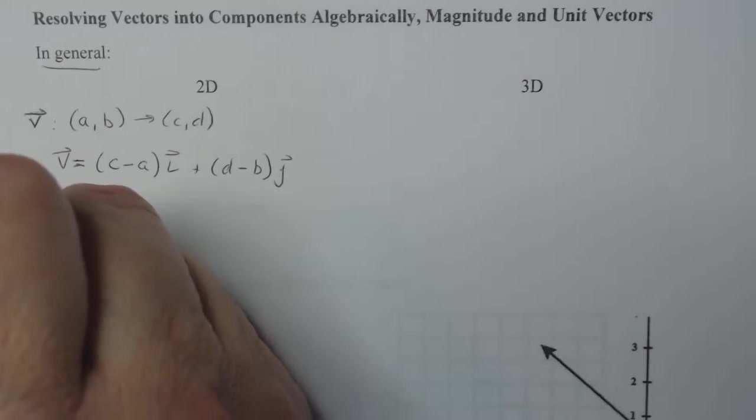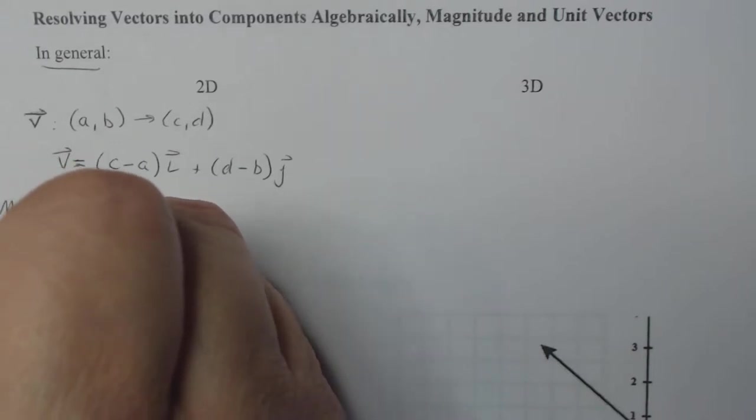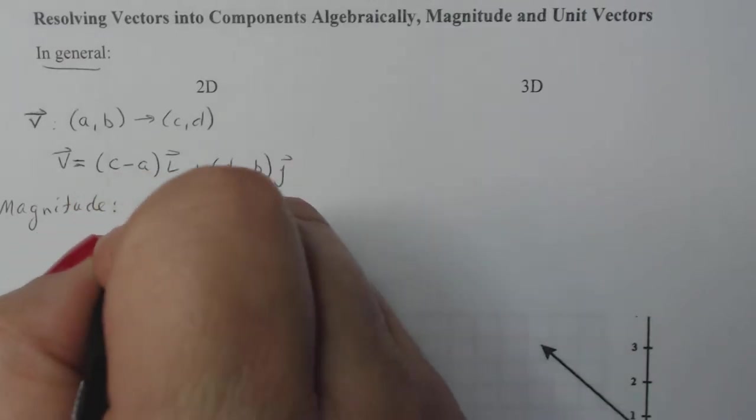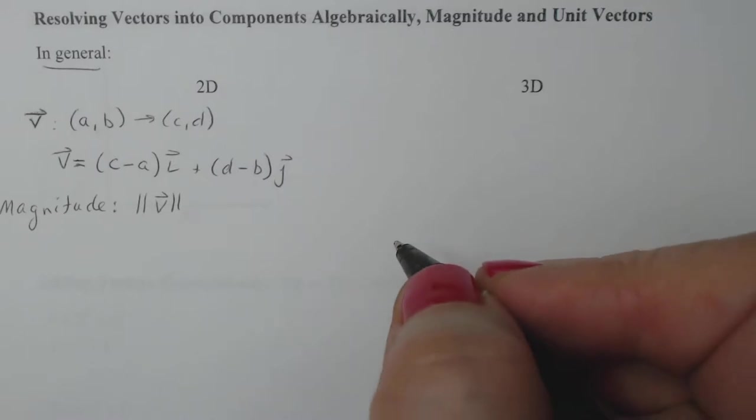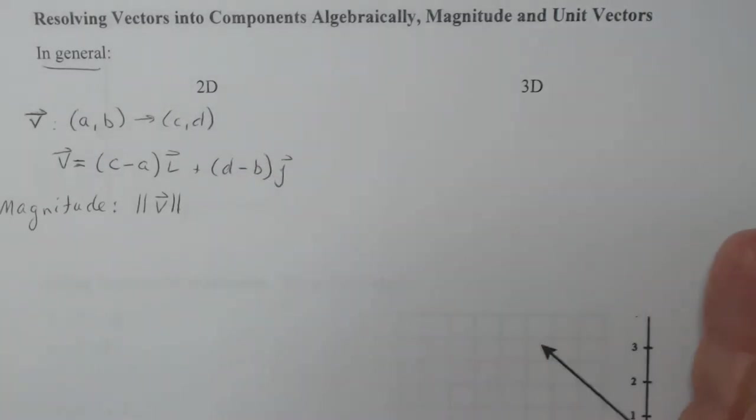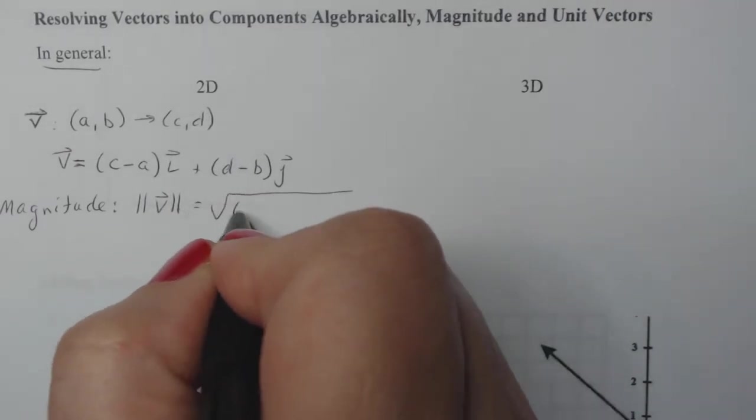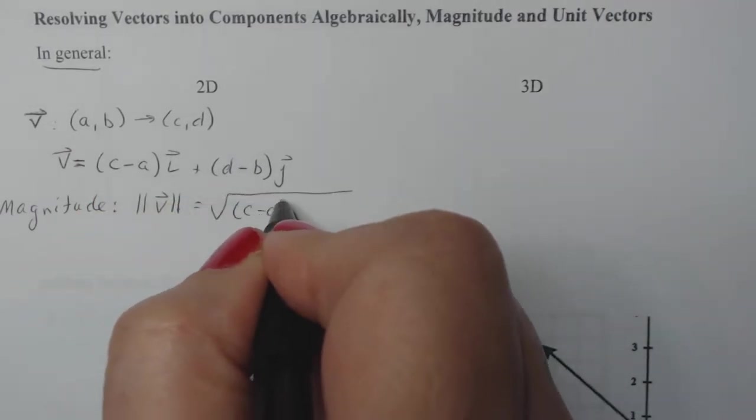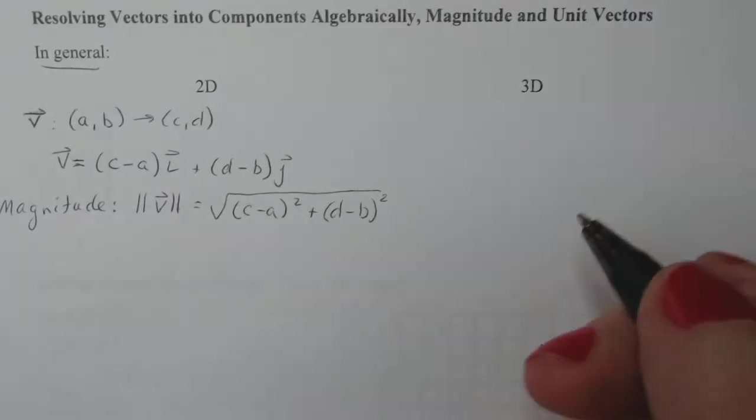Now if I want to talk about the magnitude, it has to do with the Pythagorean theorem. So the magnitude is denoted with double bars around the vector. I know in physics you use a single bar, but in mathematics we use double bars. So the formula to do this is going to be the square root of (c - a)² plus (d - b)². Again, it's rooted in the Pythagorean theorem.